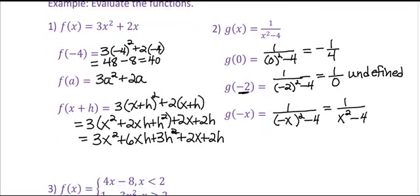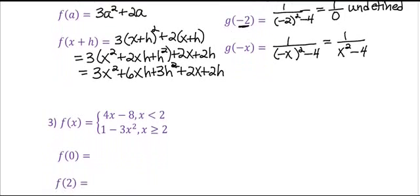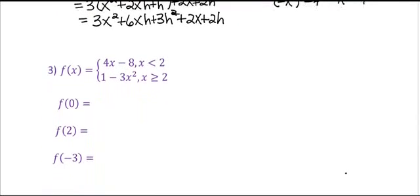Let's do one other example for evaluating functions. This particular one is a piecewise defined function. What we have to do is look at our input value and determine which piece of the domain it satisfies, and whichever piece it satisfies is the function rule we're going to substitute in. So f of 0: I notice that 0 is less than 2, so the first rule applies. I would have 4 times 0 minus 8, which is negative 8. Please understand — don't plug 0 into each piece, because that would give two output values, which contradicts the definition of a function. For every input, there's only one output.